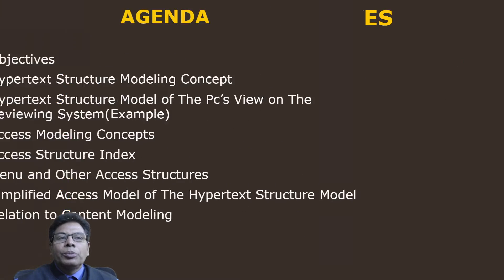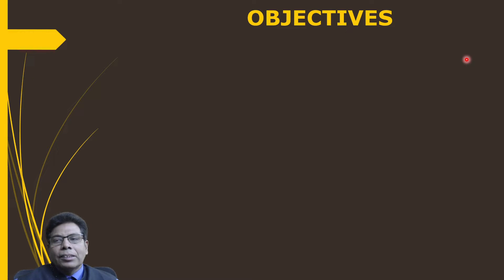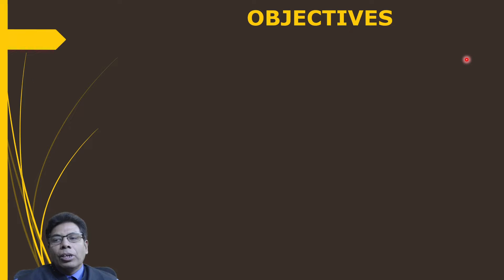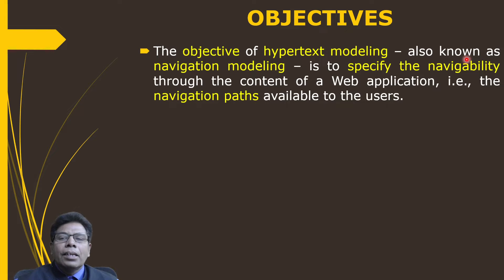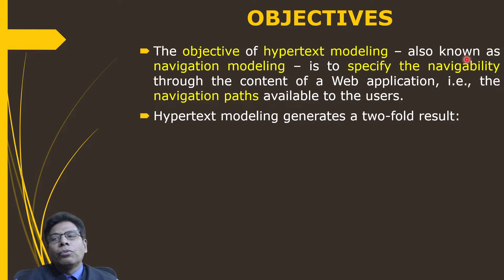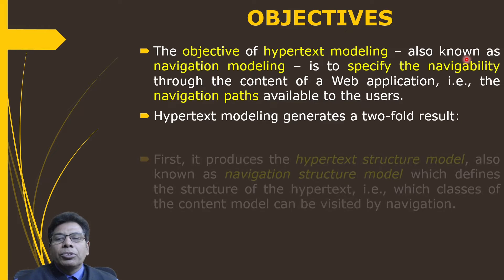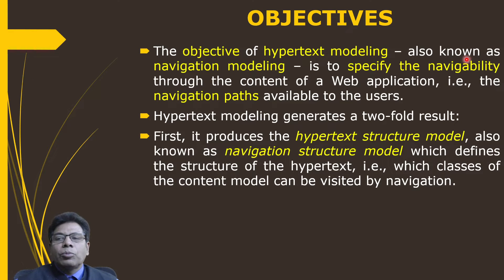The objective of hypertext modeling is to specify navigability through the content of the web application. Hypertext modeling is also called navigation modeling, where the navigation paths available to the user are specified. Hypertext modeling generates a twofold result. First, it produces the hypertext structure model, also known as the navigation structure model, which defines the structure of the hypertext.